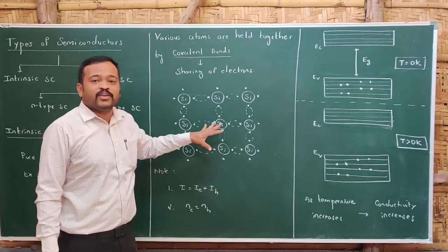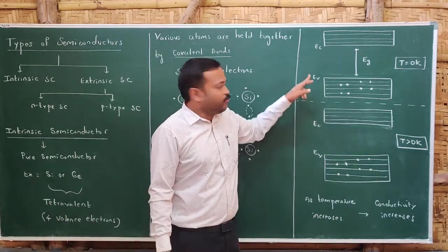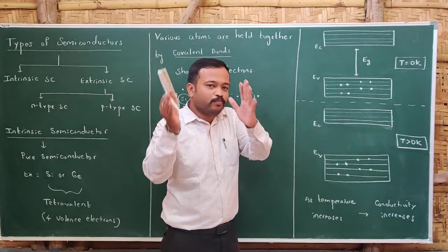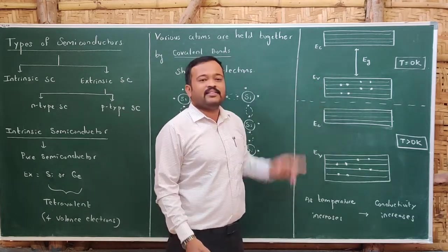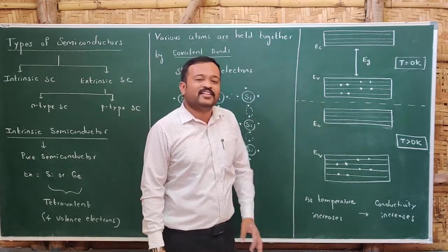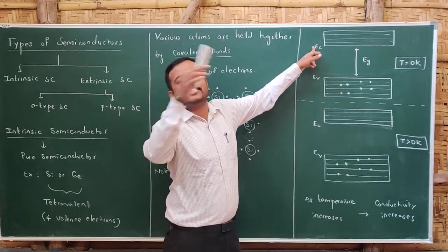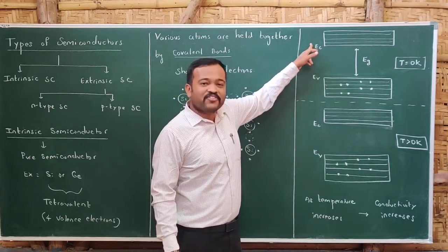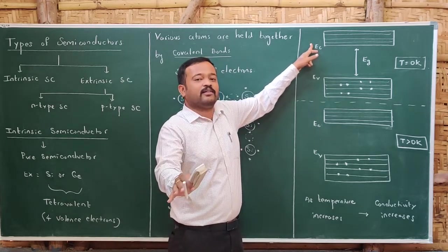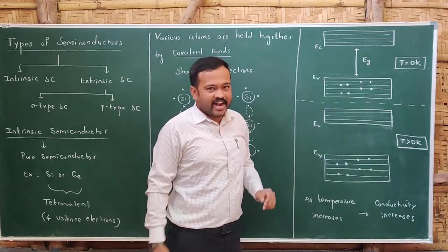Let us take this in the form of band theory. There are two bands: one is valence band and another one is conduction band. A band is nothing but a group of energy levels. Valence band is the group of energy levels of valence electrons. The band above the valence band is called the conduction band, where free electrons — conduction electrons — are present. If more conduction electrons are in the conduction band, it conducts more; if fewer, it conducts less.